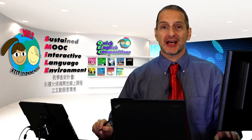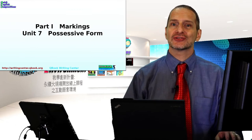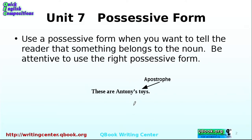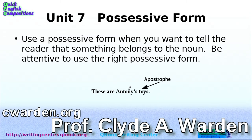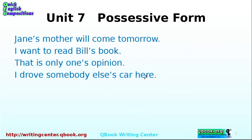Let's look at the apostrophe now. That is the possessive form, where you want to say something belongs to someone. You've probably used this many times — it's pretty straightforward. Remember, the apostrophe looks like a comma up in the air over a letter. Here's an example: 'These are Antony's toys.' Apostrophe S, no space before, no space after. It means it belongs to Antony. Very easy to remember.